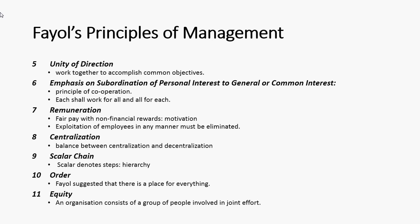Centralization: a balance should be maintained between centralization and decentralization. The scalar chain: the word scalar denotes steps or hierarchy. From top-level management to the bottom-level workers, a single scalar chain must be maintained in order to receive definite orders from top to bottom, and any issues or concerns should be reported back to top management through the same chain.